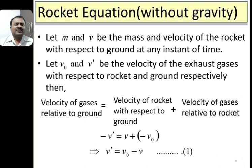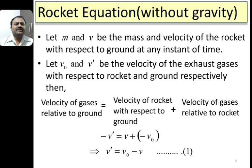The velocity of gases relative to ground can be written as velocity of rocket with respect to ground plus velocity of gases relative to rocket. Conventionally, the upward direction is taken to be positive and downward direction negative. Since the gases move downward, velocity of gases relative to ground is negative: −v' = v + (−v0), which gives v' = v0 − v. This is equation 1.